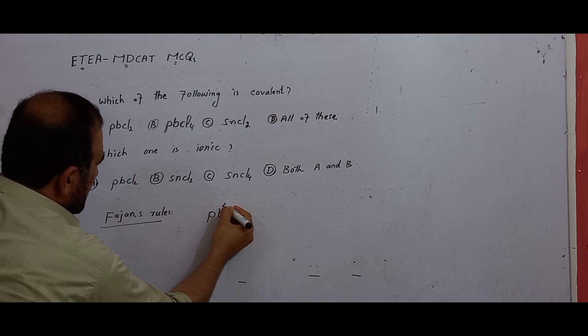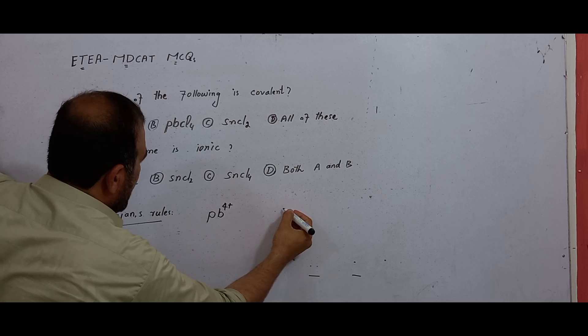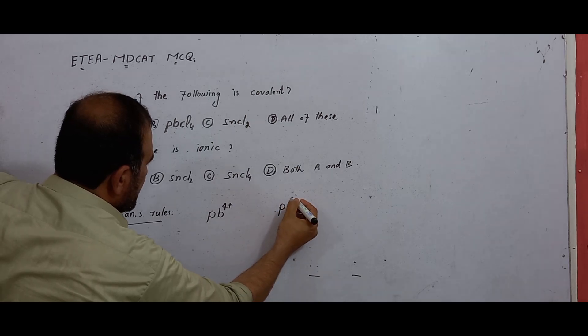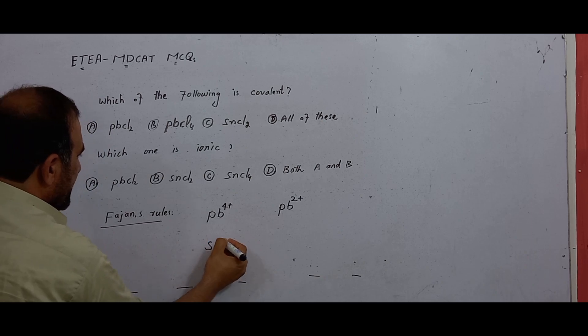Pb is plus four and plus two. Or Sn plus four and Sn plus two.